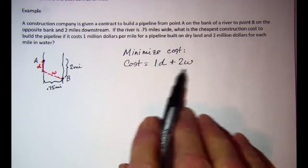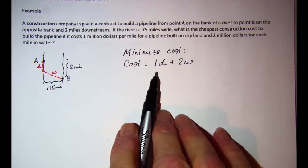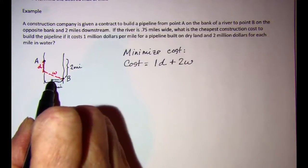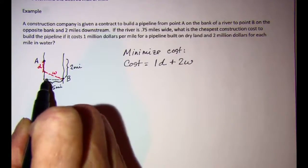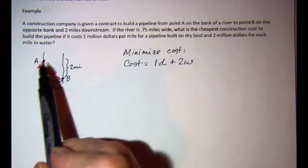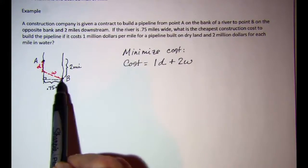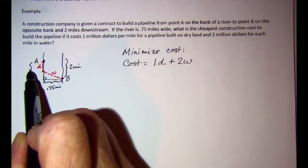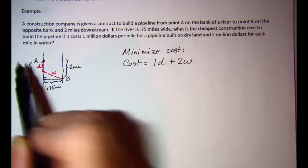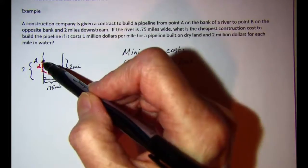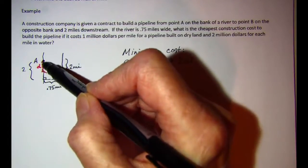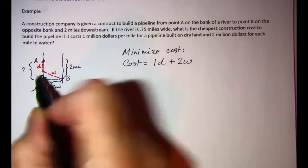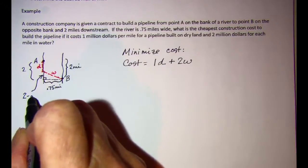We need to write this expression in the same variable. We can see that we have a right triangle: from point A to a point directly across from point B is 2 miles. The distance built on dry land is D, so the other side of the right triangle is 2 minus D.